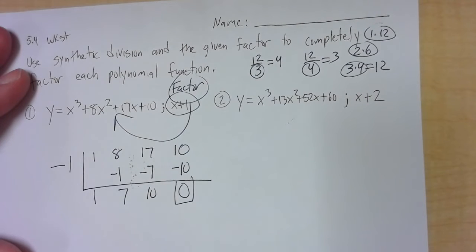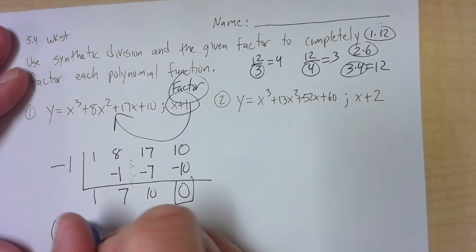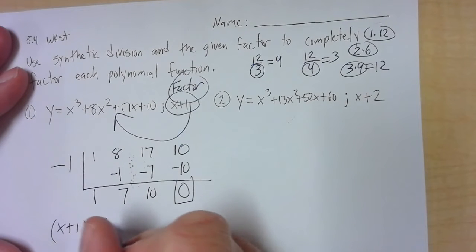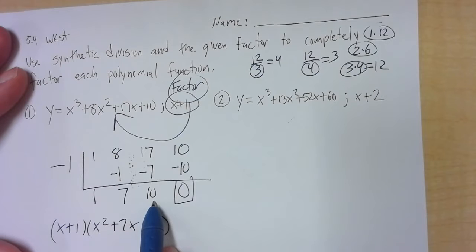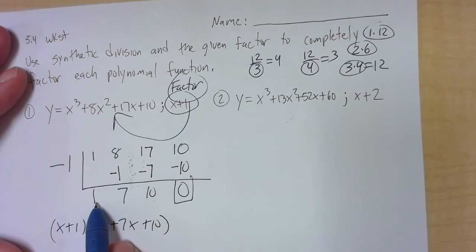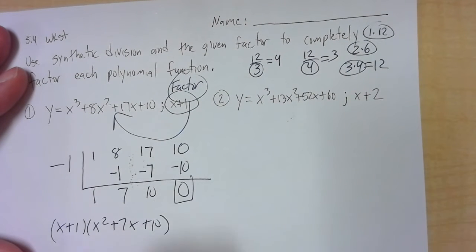Now, this here means x plus 1. This part here means x squared 7x plus 10. This is the number. This is the x. That's the x squared. The remainder. I box it in.